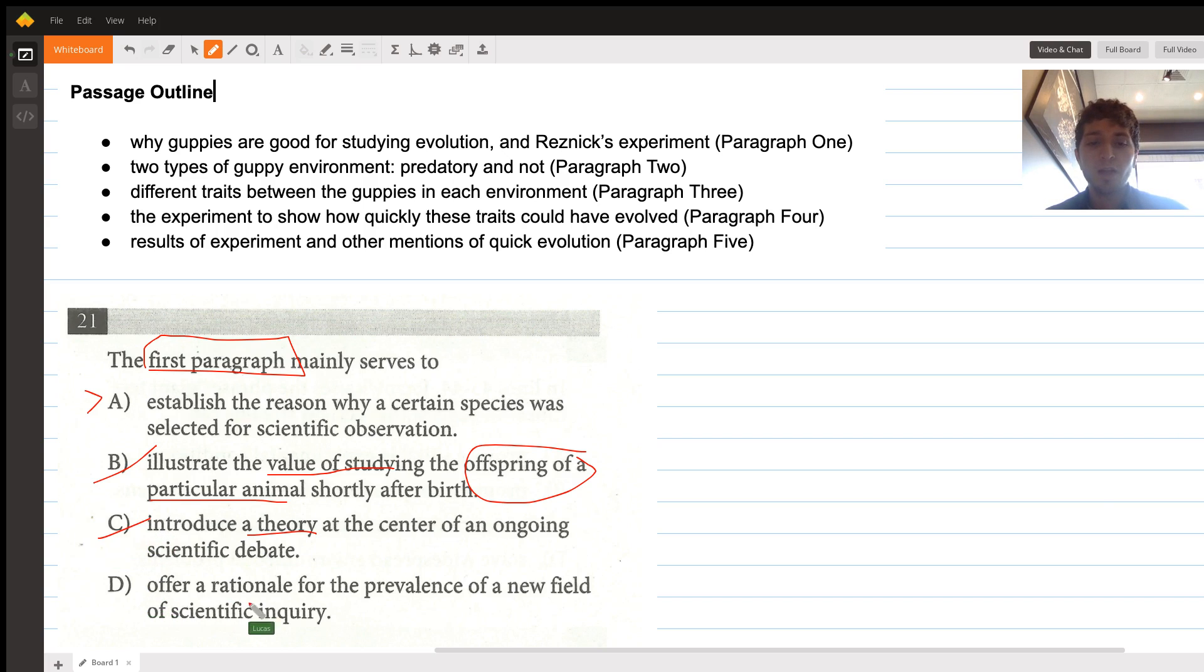D says offer a rationale for the prevalence of a new field of scientific inquiry. Again, there's no field of scientific inquiry that's mentioned in the first paragraph, nor is there a rationale given for it, obviously because there's nothing there. So we can eliminate that one as well.